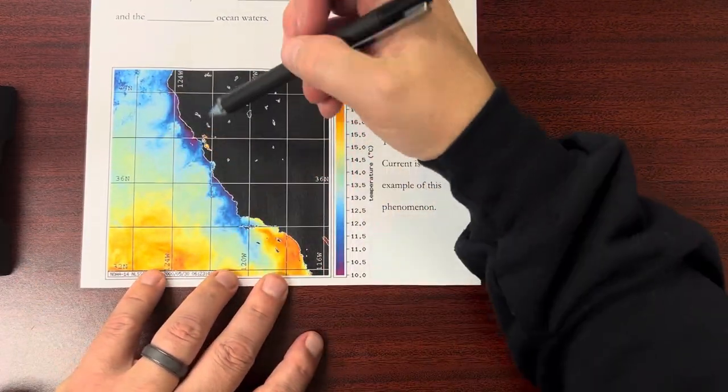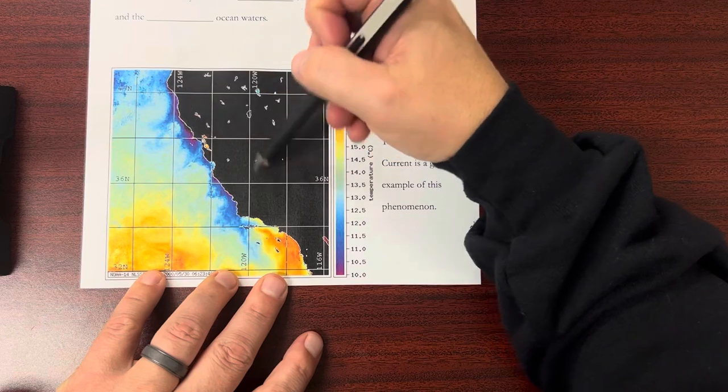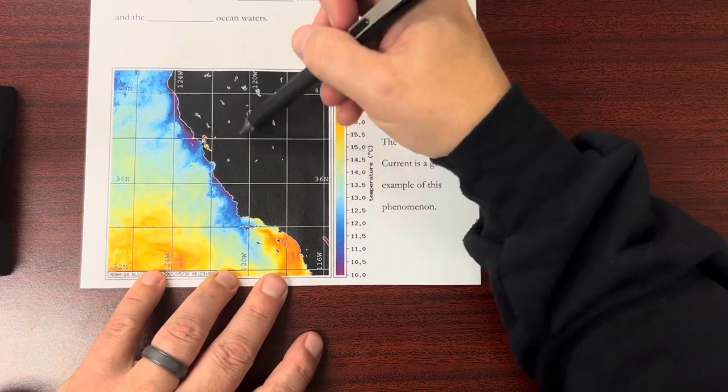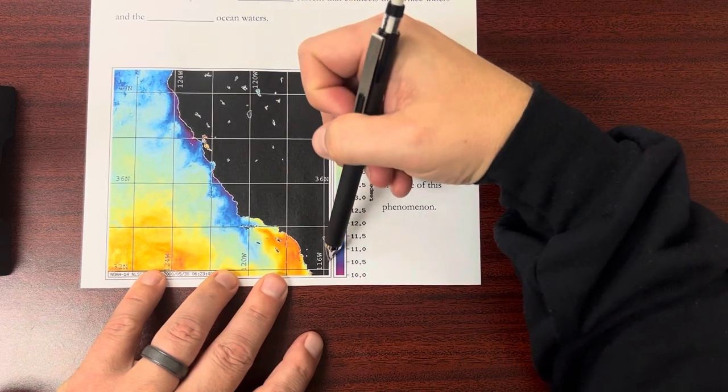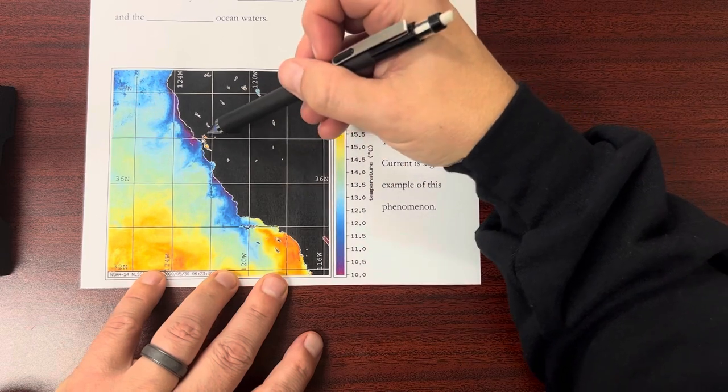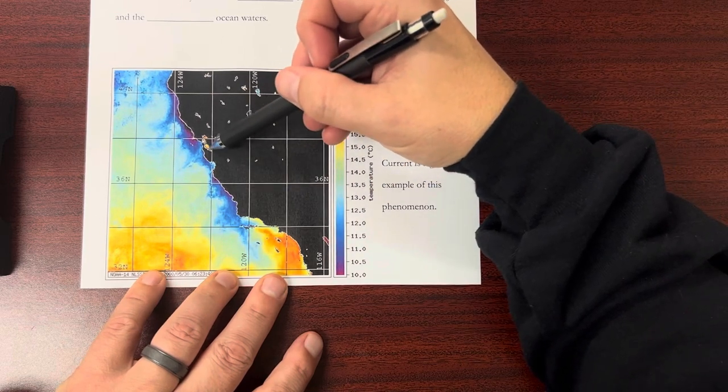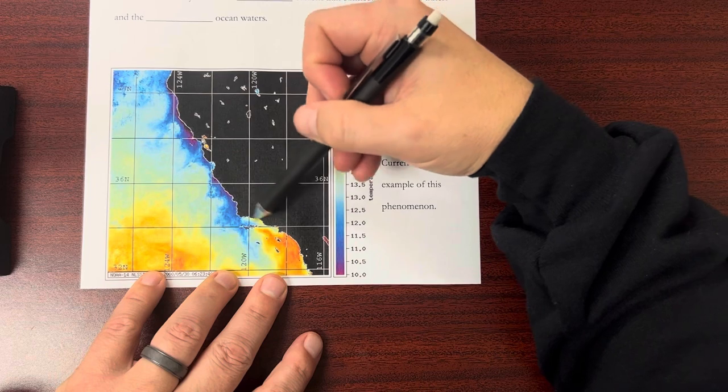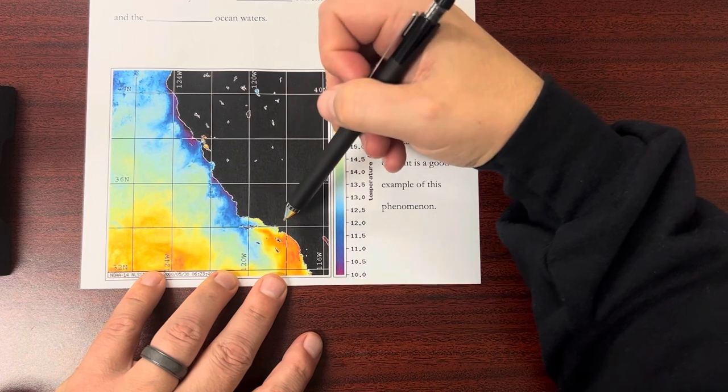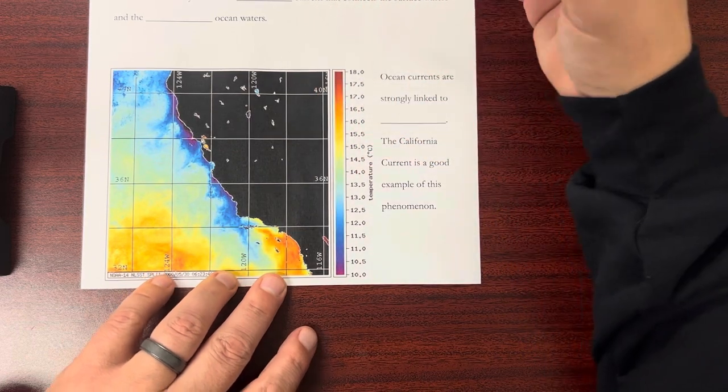And then here what we have is we have California. This is the United States. We've got California here and then goes down into Mexico. But what I want to show you is this San Francisco area. This is the LA area and San Diego. And we're going to take a look at something here.